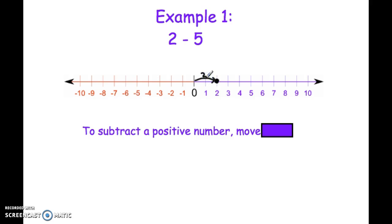The difference here is I'm subtracting 5. If I'm subtracting 5 positive numbers, that's going to make my number get smaller. When I subtract a positive number, I'm going to move left. So I'm going to move 1, 2, 3, 4, 5 spaces to the left. Notice I land at negative 3. That means 2 minus 5 equals negative 3.